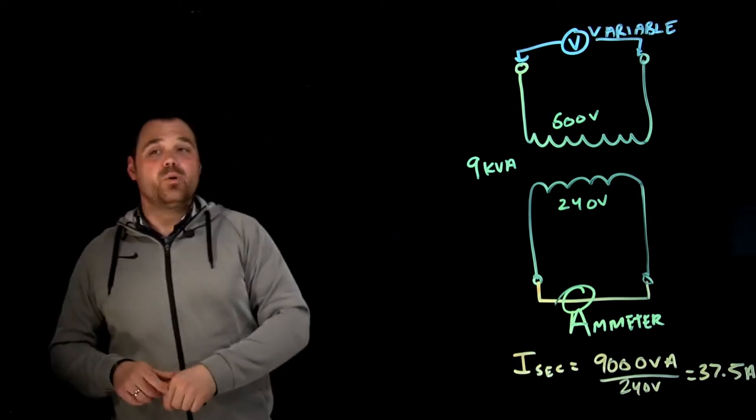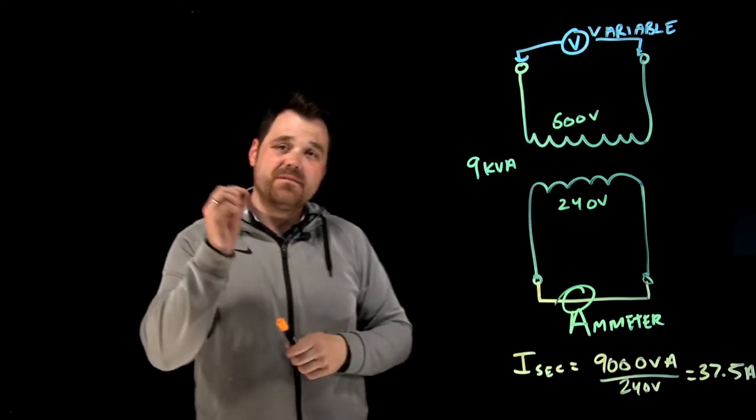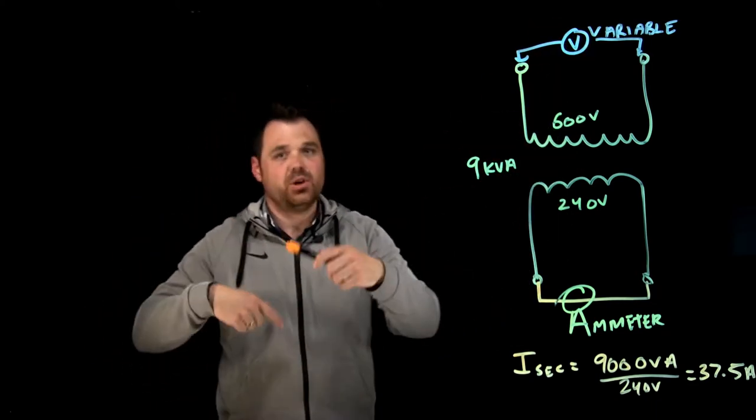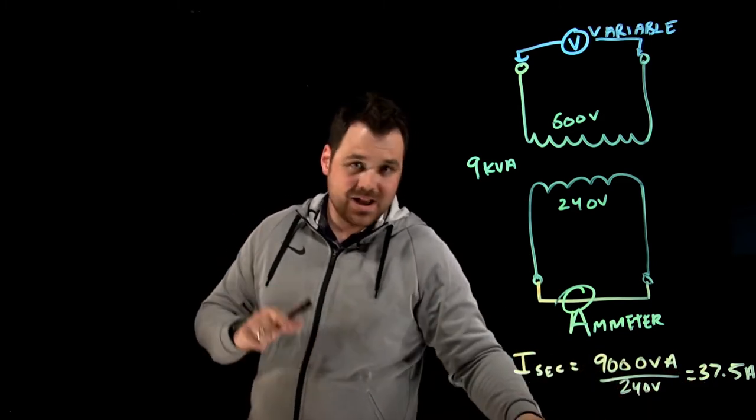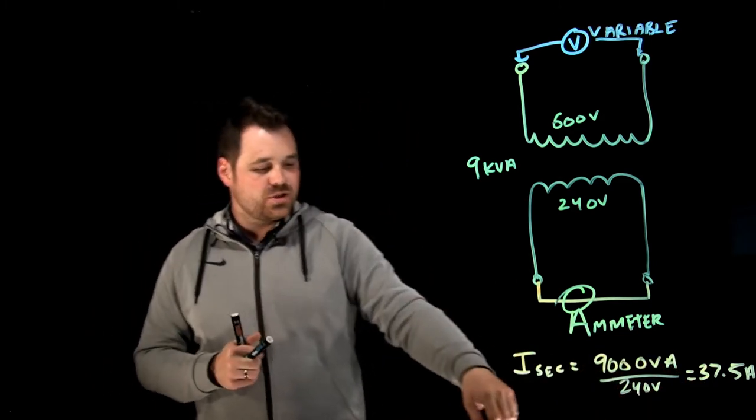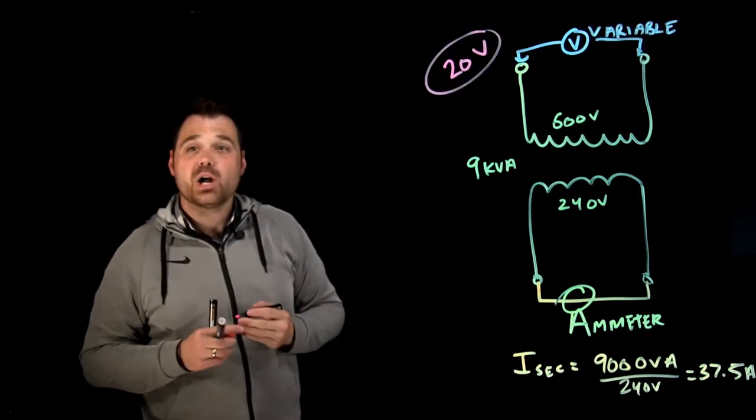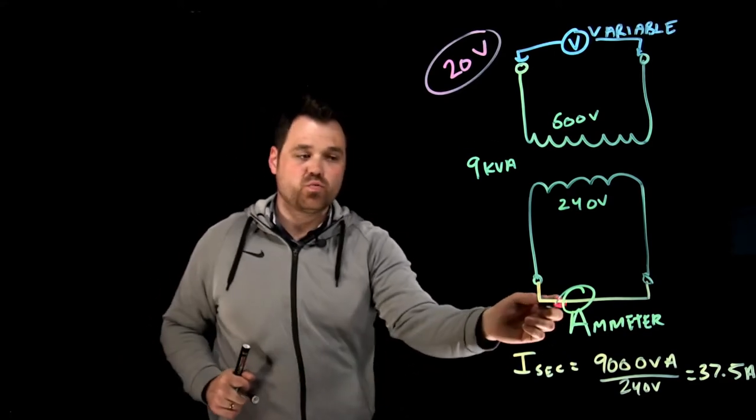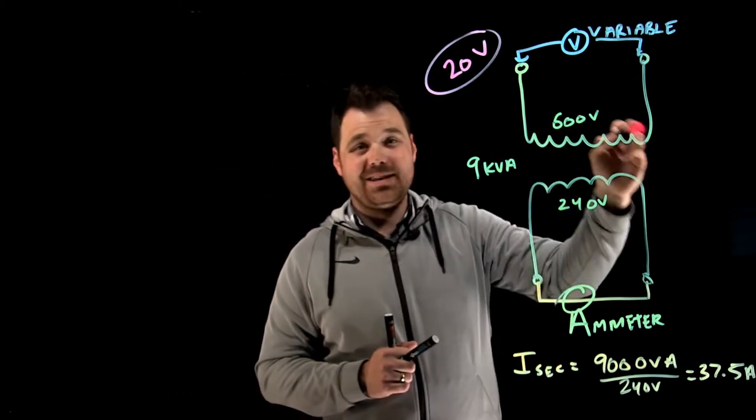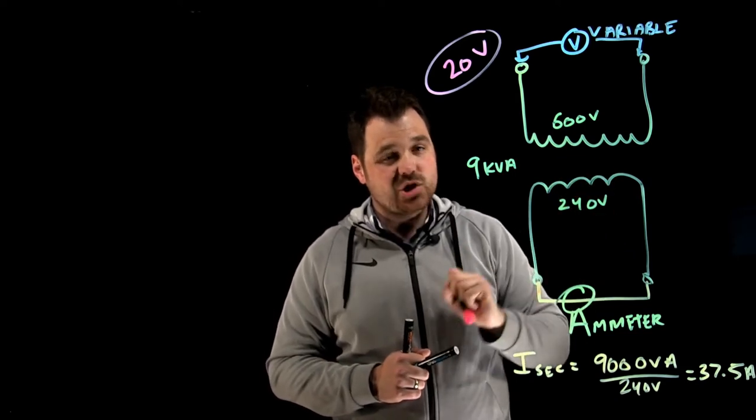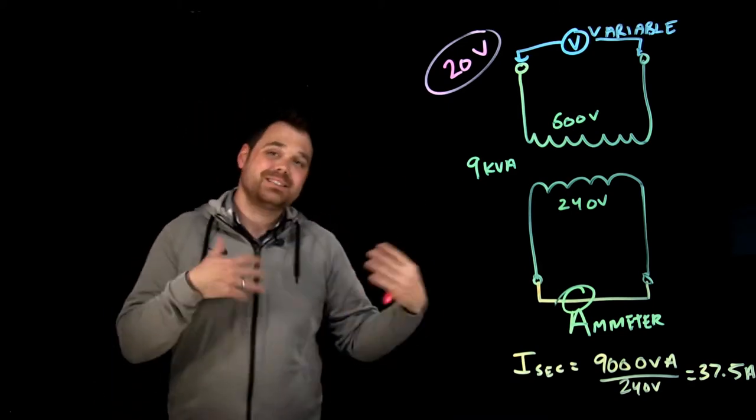So what I want to do is I'm going to short circuit, hook up my ammeter, and slowly start increasing that voltage on the variable voltage supply. That's going to go up, it's going to go up, it's going to go up. Eventually, I'm going to reach 37.5 amps on my ammeter. That's when I stop. And now let's say just for our conversation here today, let's say that number was 20 volts. That's what I got on my voltage supply in order to reach my rated secondary current. That is the amount of voltage required to overcome the impedance of the transformer to get my rated secondary voltage.